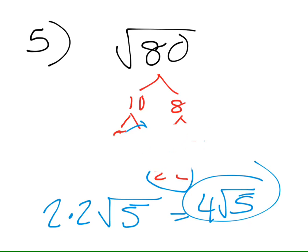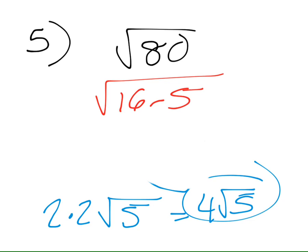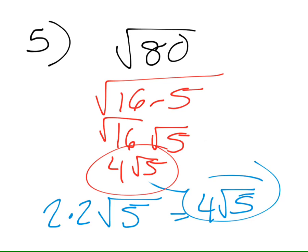The other way you could have looked at it is you could have just said, well, 80 is 16 times 5. This is the same thing as √16 times √5, and the square root of 16 is 4. So the simplified radical is 4 times the square root of 5. So that's what you're doing on these problems. That's how we simplify square roots.